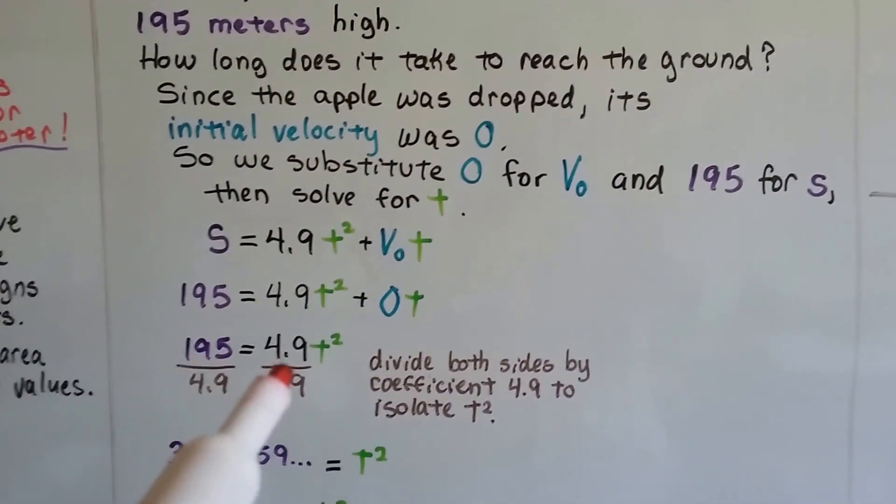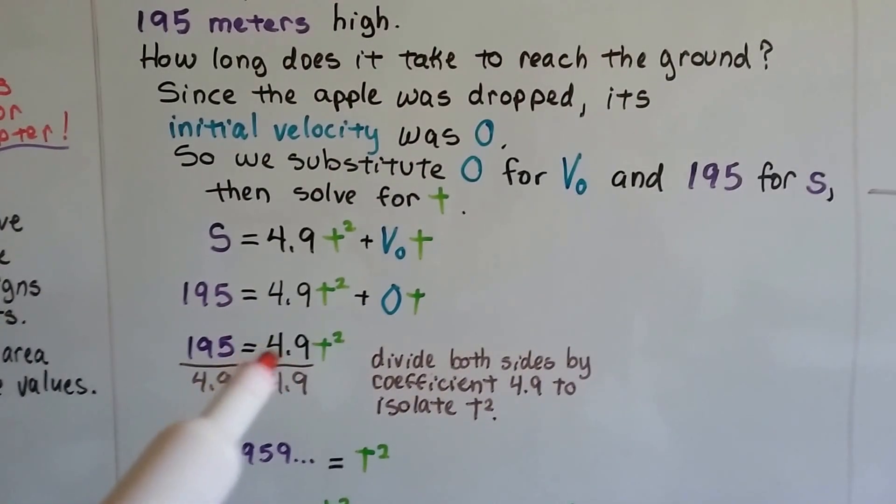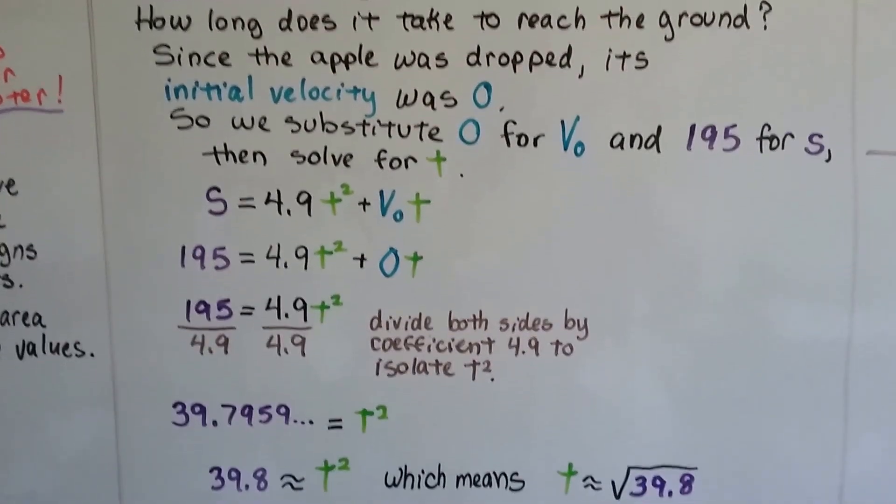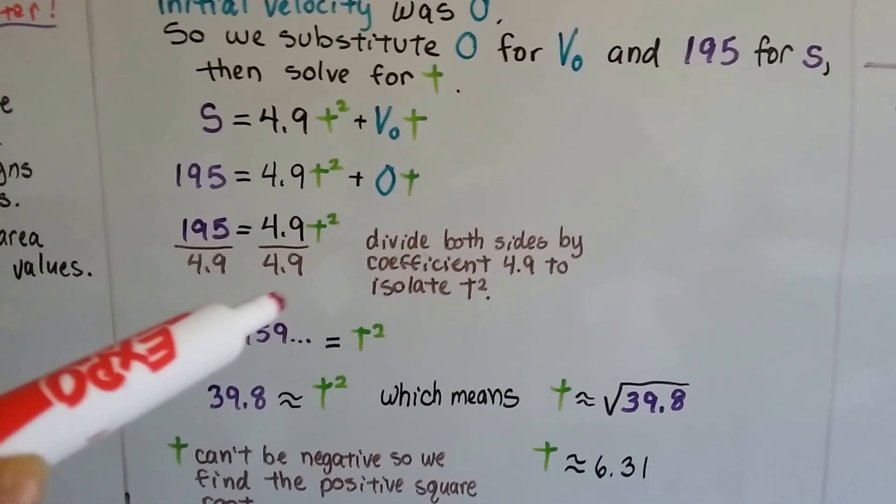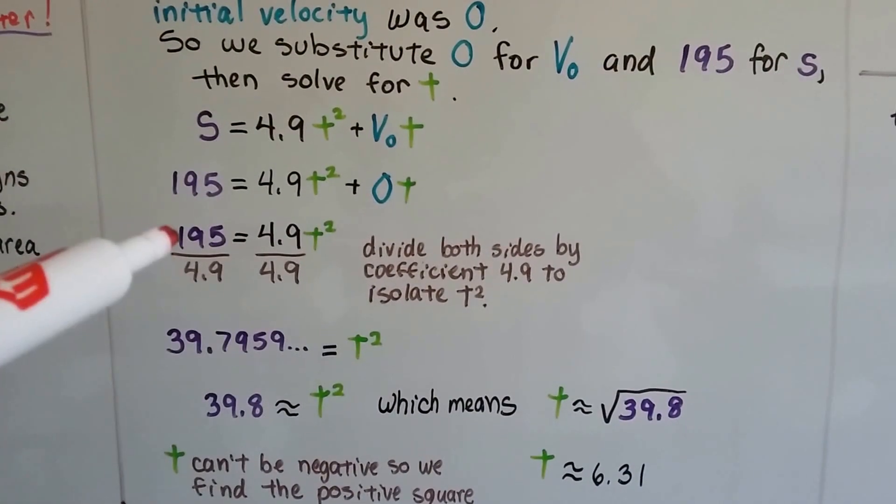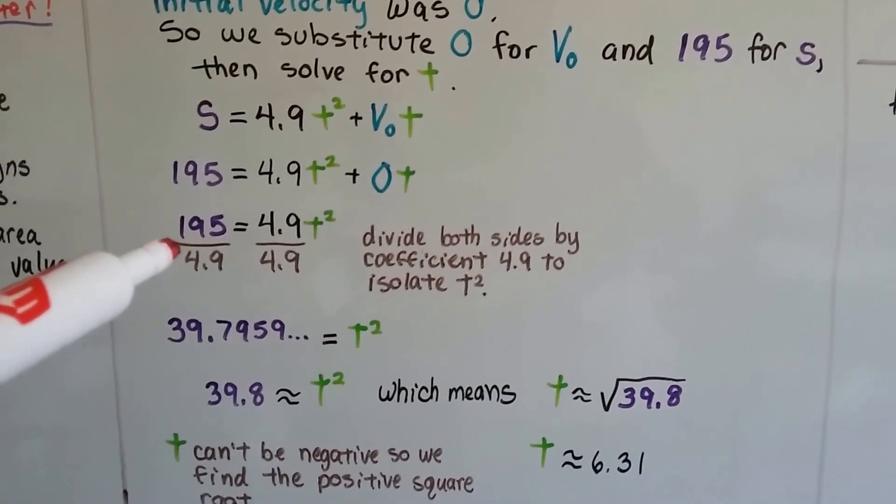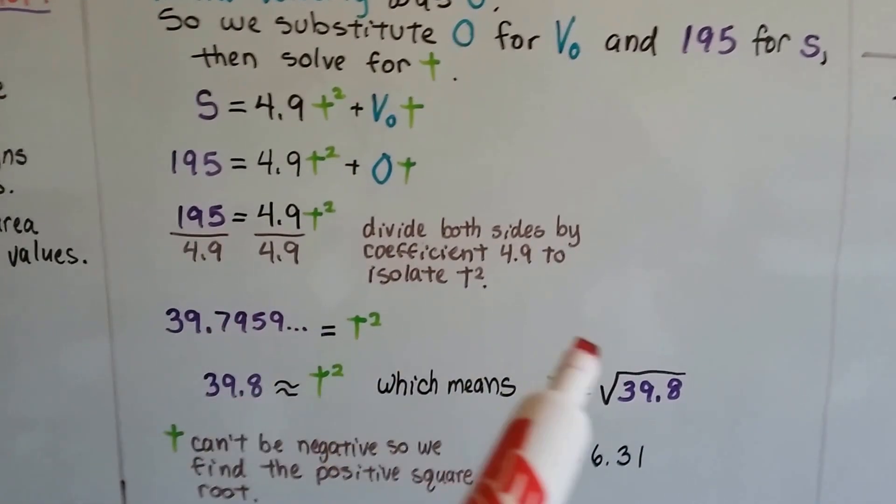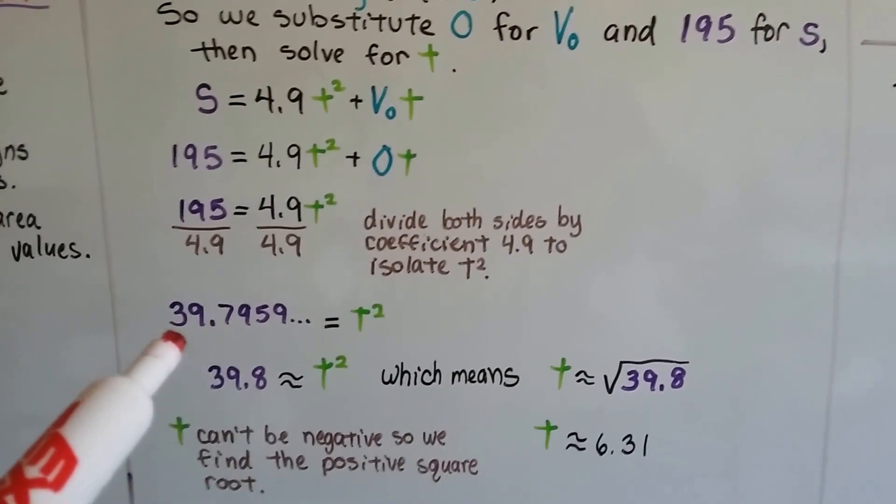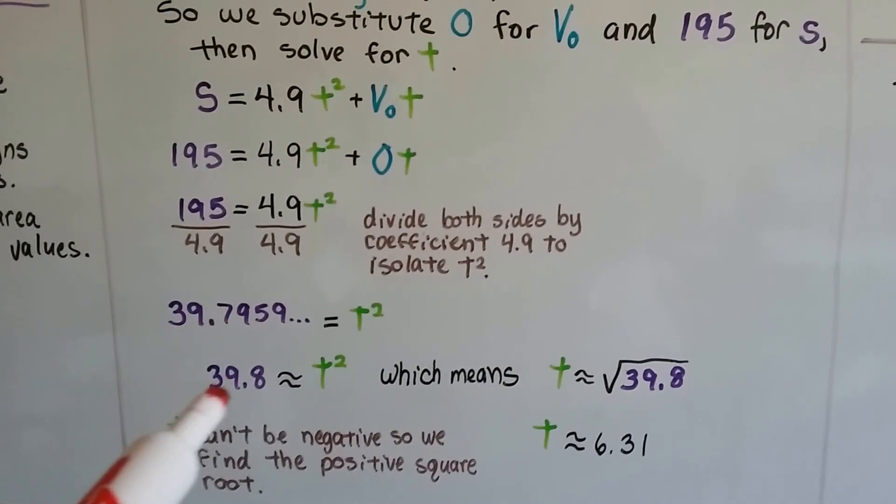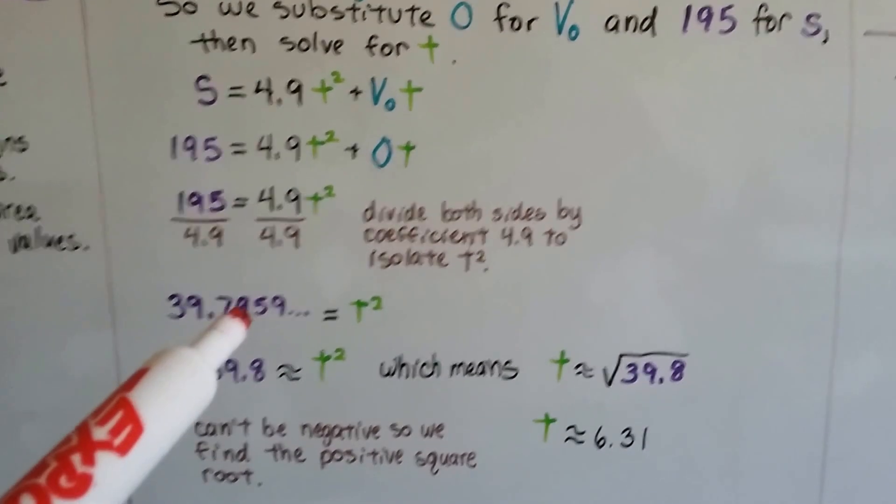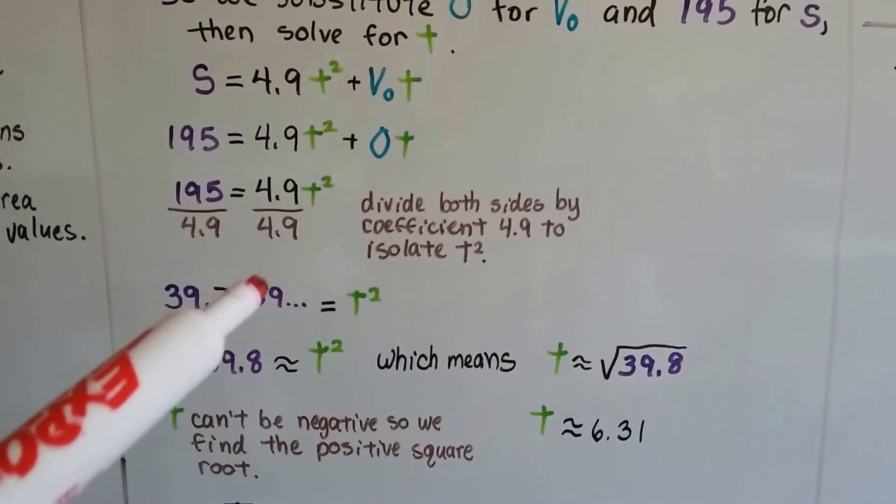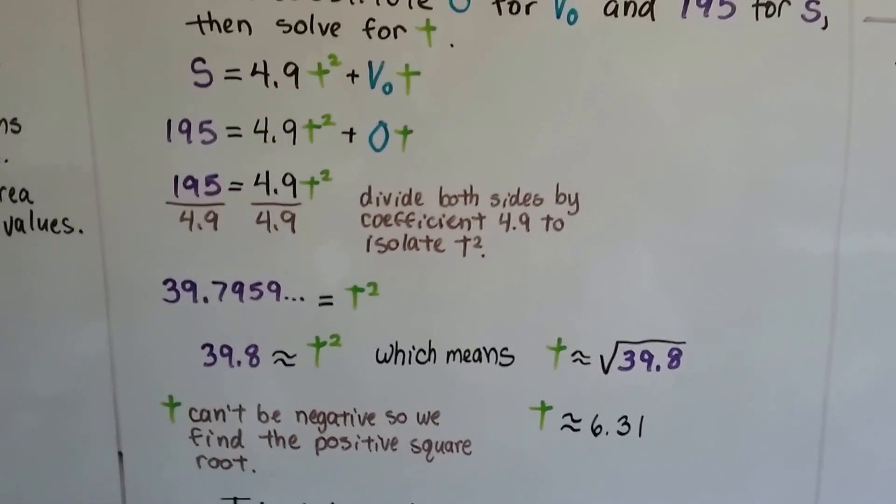If we divide both sides of this equation by 4.9, it's going to isolate that t squared. So we have t squared and 195 divided by 4.9 is 39.7959. We can round this to 39.8. That 9 is telling the 7 to go up to the next number 8. And because we did that rounding, it's an approximate.